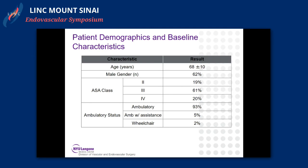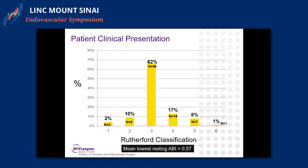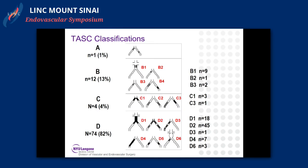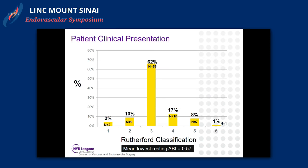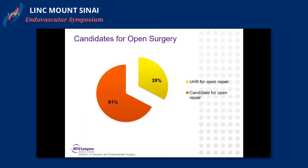Some patient characteristics: most of these patients were claudicants, with some critical limb ischemia patients and a mean resting ABI of 0.57. The TASC classification breakdown shows the majority — 82% — were TASC-D. About a third of patients were deemed unfit for open repair.